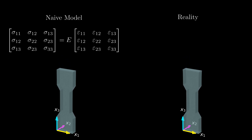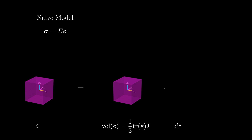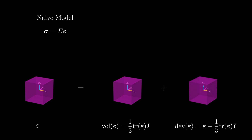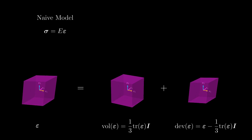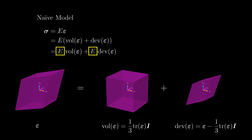Let's take a closer look at what the naive model is doing. It assumes that the stress is equal to a material parameter times the strain. The strain can be split into one contribution describing the pure volume change and another describing the pure shape change. Substituting this volumetric-deviatoric split into the naive model, we observe that both the volumetric and deviatoric parts of the strain are multiplied by E and therefore contribute equally to the stress. This means the naive model assumes the material has the same resistance to both volume change and shape change — and this is exactly why it fails to describe the Poisson effect.